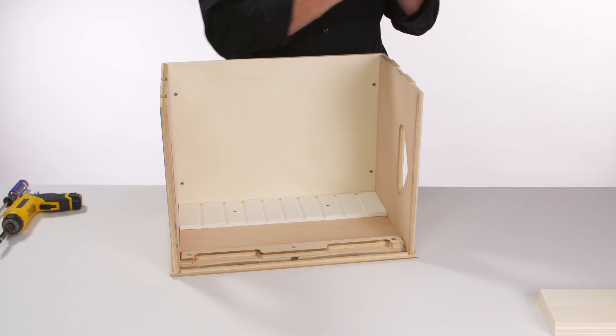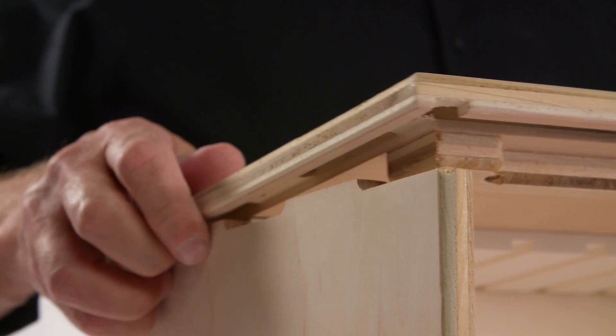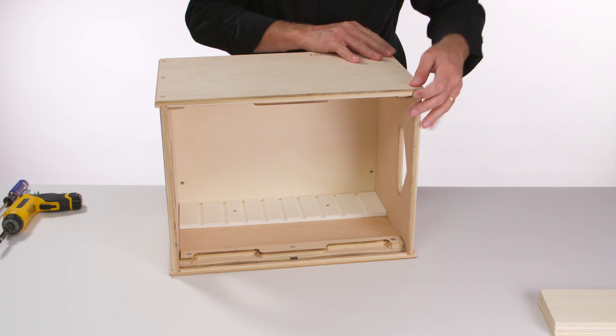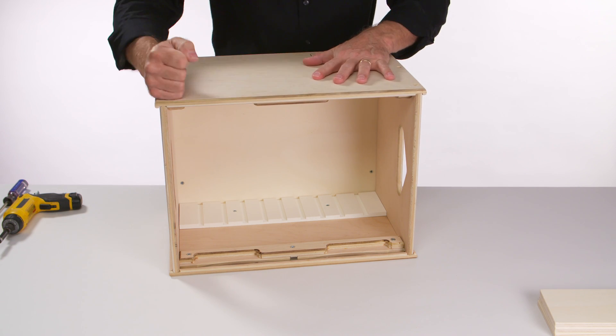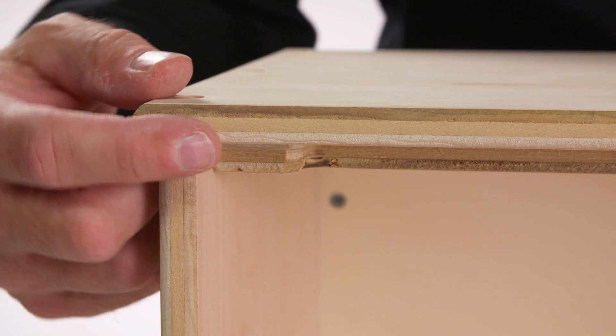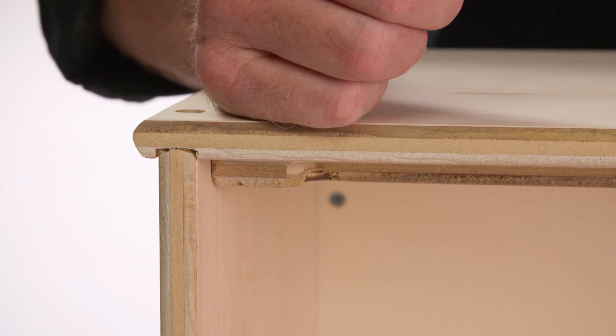Now assemble the last long side onto the Joker box. Make sure that the bottom groove is towards the bottom of the box. Once you make sure that the sides are lined up, a little gentle persuasion might be needed to get everything into place. Check all the corners and make sure that the sides are fully inserted into their grooves.